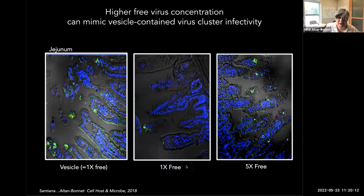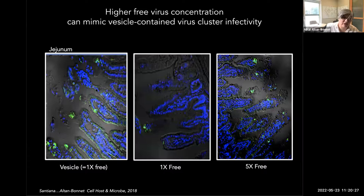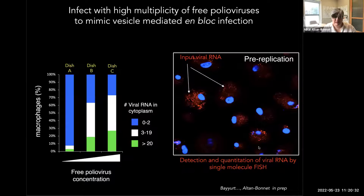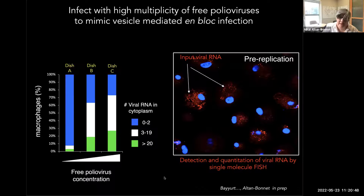When viruses go in en bloc or en masse — either via extracellular vesicles or viral aggregates — they can potentially increase the initial rates at which viral proteins are made and viral RNA is synthesized, and overcome host defenses. Indeed, when we increase the concentration of free viruses in our inoculums, we can mimic the infectivity of the vesicle-cloaked viruses, which only carry a fifth of the viral load. We're in the process right now of examining this replication barrier further.